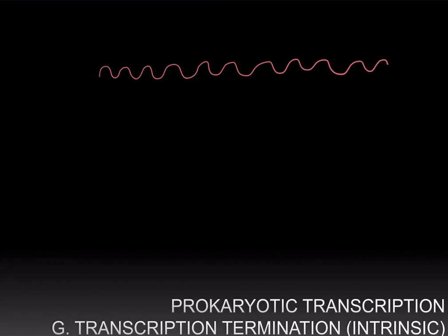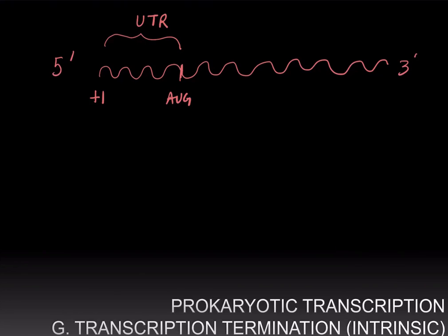The start codon is not at the very beginning of the transcript, which is at position +1, but a little bit afterwards. Therefore, this region of the transcript is not translated and is called an untranslated region, or UTR. Since transcripts are made five prime to three prime, this untranslated region is on the five prime side and is called the five prime UTR.